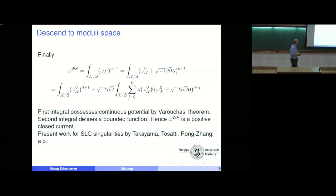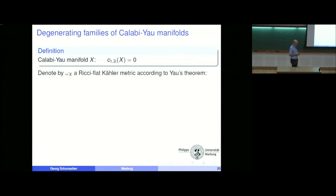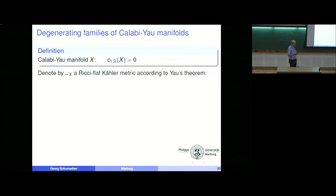Now let me come to degenerating families of Calabi-Yau manifolds. This case, so far, works in a different way. For us, a Calabi-Yau manifold is just a compact Kähler manifold with vanishing first real Chern class — this is the most general definition. According to Yau's theorem, we have a Ricci-flat Kähler metric in any Kähler class, meaning we have a corresponding Ricci-flat volume form, with d-d-bar log equal to zero.